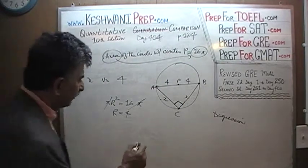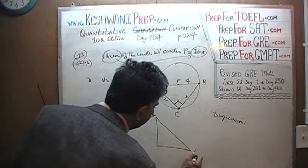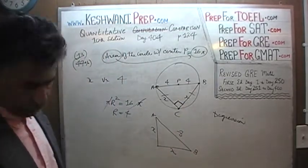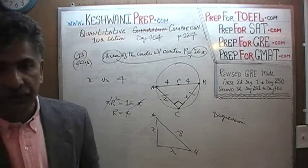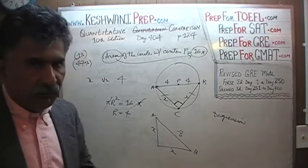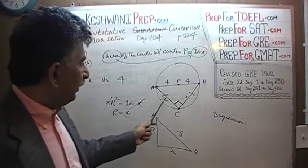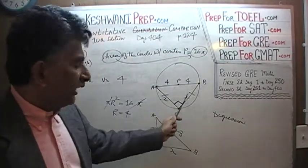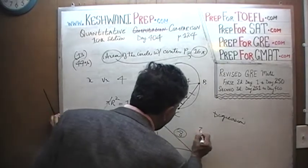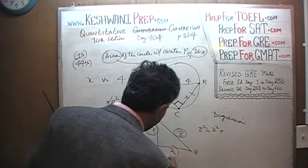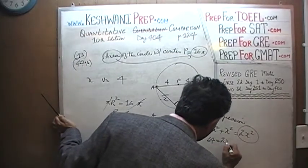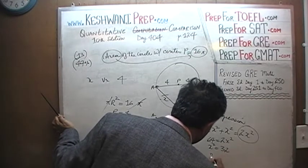Now we can do the rest. The diameter A to B is 8, and the two sides are both X. These two sides are equal because we are told it is an isosceles triangle — not because they are radii. Since it's an isosceles right triangle, we apply the Pythagorean theorem: 8 squared equals X squared plus X squared, so 2X squared equals 64. Therefore X squared equals 32, and X equals the square root of 32.